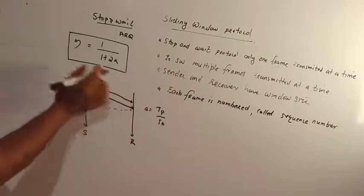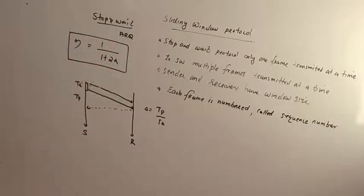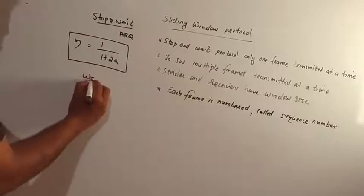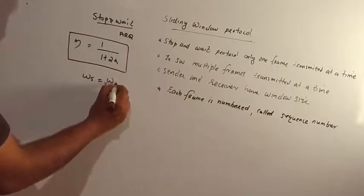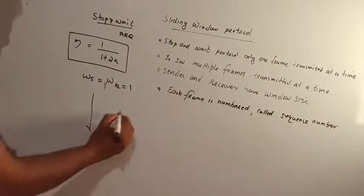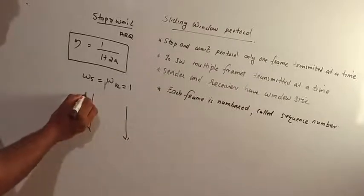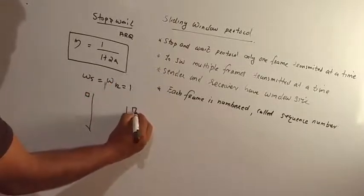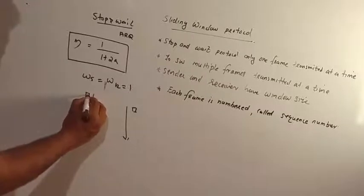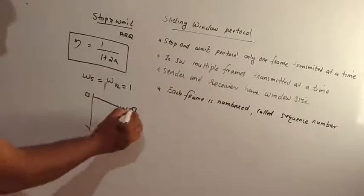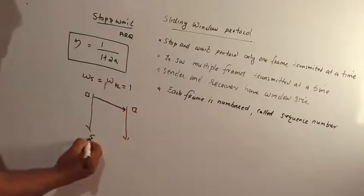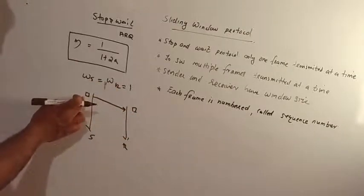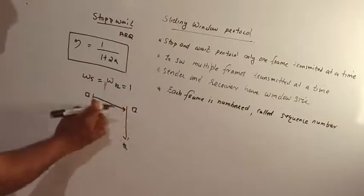The efficiency calculation is 1 divided by 1 plus 2a. In the stop and wait protocol, the sender window size is 1 and the receiver window size is 1. You will find a buffer size — this is 1 frame load. The buffer size applies to both the sender and receiver.